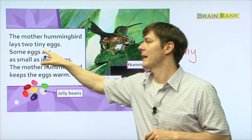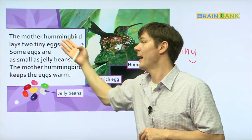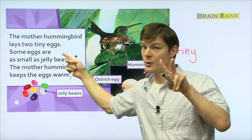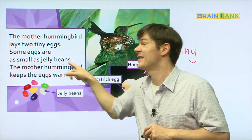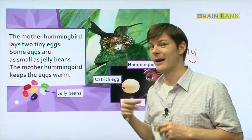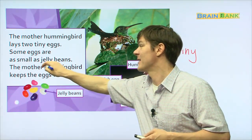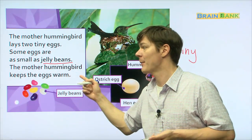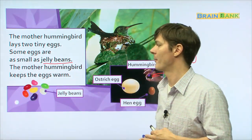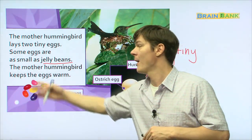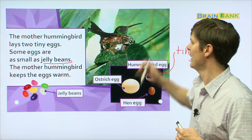The mother hummingbird lays two tiny eggs. Everyone read with me. The mother hummingbird lays two tiny eggs. Some eggs are as small as jelly beans. Wow. Everyone, some eggs are as small as jelly beans. The mother hummingbird keeps the eggs warm. Everyone read with me. The mother hummingbird keeps the eggs warm.